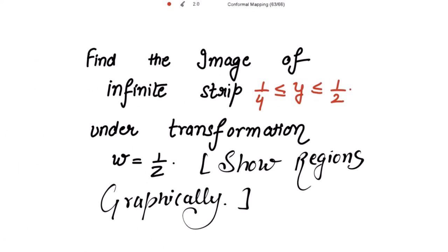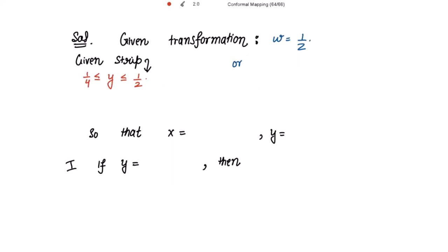Good morning. We need to find the image of the infinite strip y greater than or equal to 1/4 and less than or equal to 1/2 under the transformation w = 1/z, and we have to show the regions graphically. The given transformation is w = 1/z and this is the given strip: y greater than or equal to 1/4 and less than or equal to 1/2.